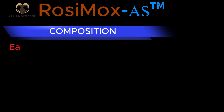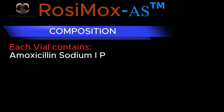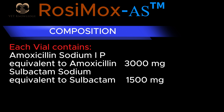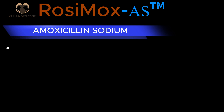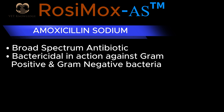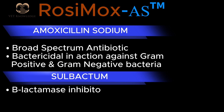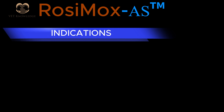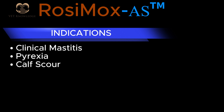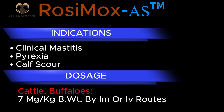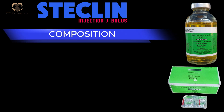Rosamox — composition: each vial contains amoxicillin sodium IP equivalent to amoxicillin 3000 mg and sulbactam sodium equivalent to sulbactam 1500 mg. Amoxicillin sodium: broad-spectrum antibiotic, bactericidal in action against gram-positive and gram-negative bacteria. Sulbactam: beta-lactamase inhibitor that potentiates the action of amoxicillin against resistant bacteria. Indications: clinical mastitis, correxia, and calf scour. Dosage for cattle and buffaloes: 7 mg per kg body weight by IM or IV routes.